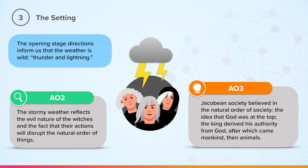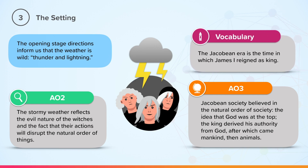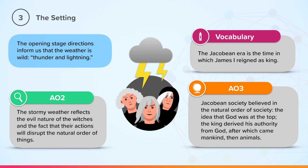Jacobeans believed in the natural order of society. This was the idea that God was at the top, the king derived his authority from God, after which came mankind and then animals and so on and so forth. The Jacobean era is the time in which James I reigned as king.